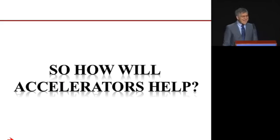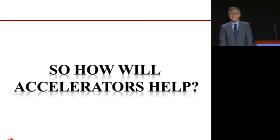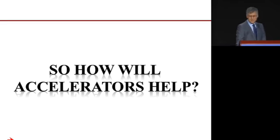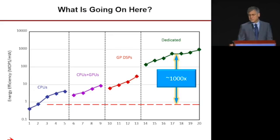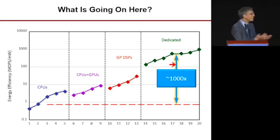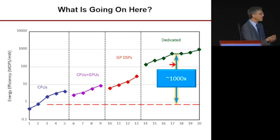If you look at this, the total memory system energy in a normal computer is probably somewhere between half to three-quarters of the total energy the processor dissipates. If this is the case, how is specialization going to help us? Amdahl's law says the maximum improvement we can achieve is a factor of two if all the energy is in the memory system.